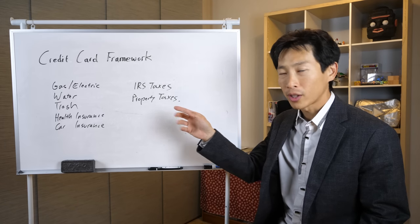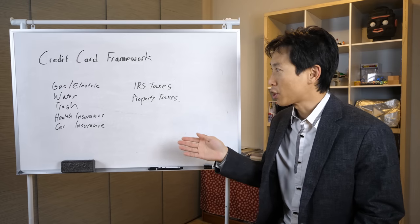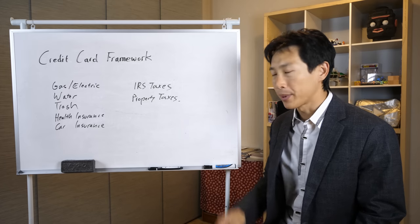Now, I want you guys to take a look at these 7 bills over here and see what the similarities are. First, I got gas, electric, water, trash, health insurance, car insurance, IRS taxes, and property taxes.